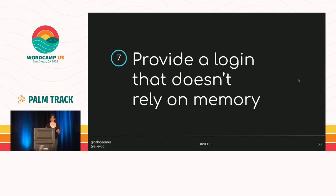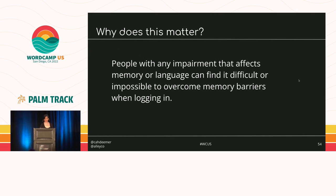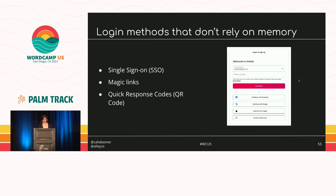Our seventh solution is to provide a login that doesn't rely on memory or any type of cognitive skill — make sure there's an easier option for folks who need it. People with any impairment affecting memory or language can find it difficult or impossible to overcome memory barriers when logging in. Offer single sign-on, magic links, and QR codes. Allow users to copy and paste their password and to use a password manager — password managers are enabled by default when you're using semantic HTML, so don't get in the way of that. This example from Airbnb includes many options for logging in, including Facebook, Google, Apple, and email.